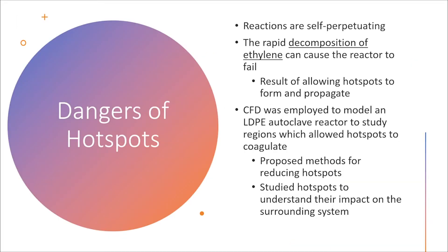The free radical polymerization process is an exothermic process with self-perpetuating reactions taking place. This means that if left unchecked, the reactions will just continue to add heat into the system at an exponential rate. The decomposition of ethylene monomers specifically can lead to a large buildup of heat and pressure. The reaction rates can exceed a controllable rate and raise the pressure above what the reactors can handle, causing them to fail. This event typically occurs when hotspots within the reactor are allowed to propagate from a lack of mixing or from defects within the reactor. One of the goals of this CFD study was to study an LDPE autoclave reactor under normal operating conditions to better understand the formation and properties of those hotspots, proposing methods for reducing them.